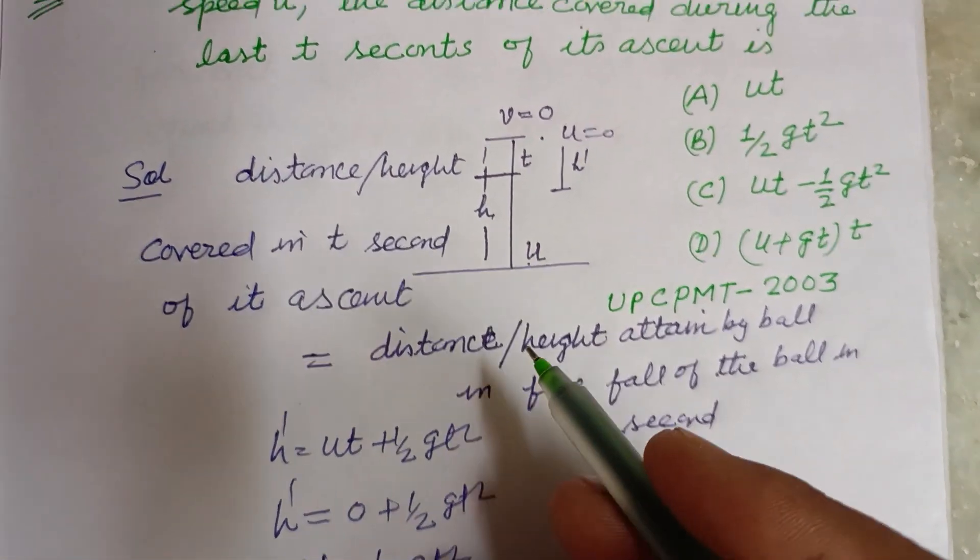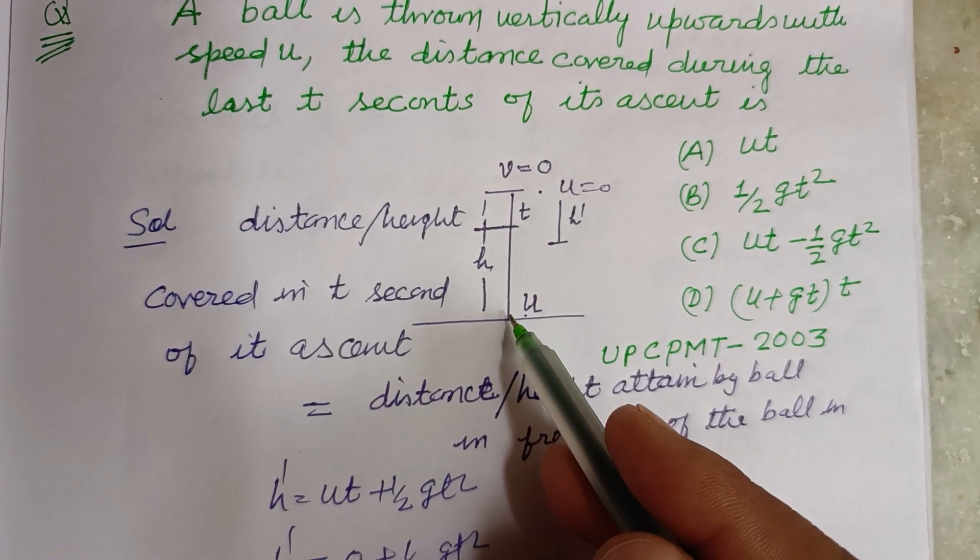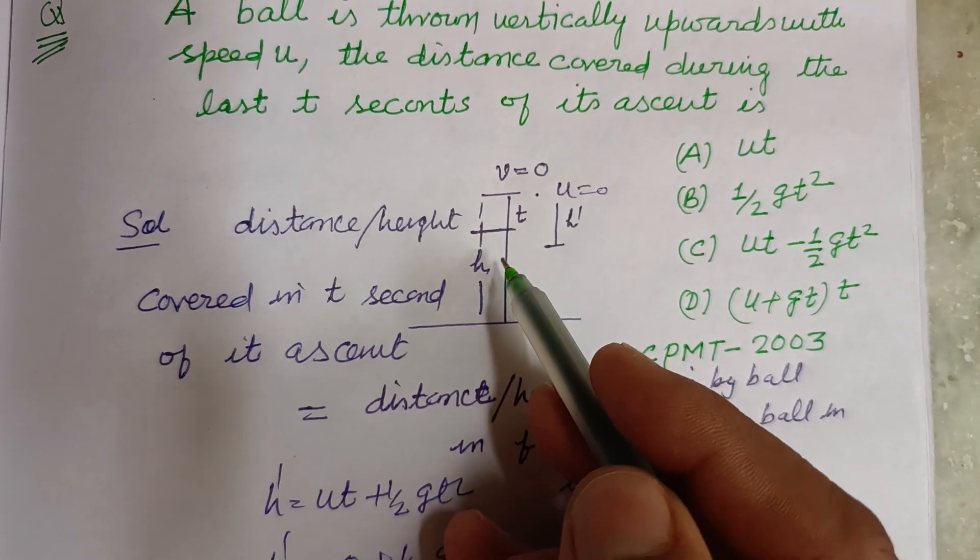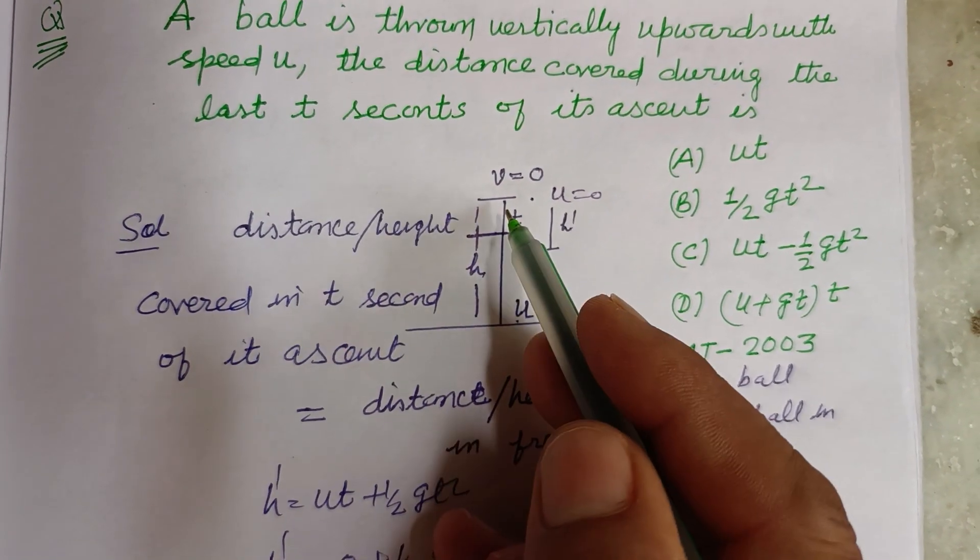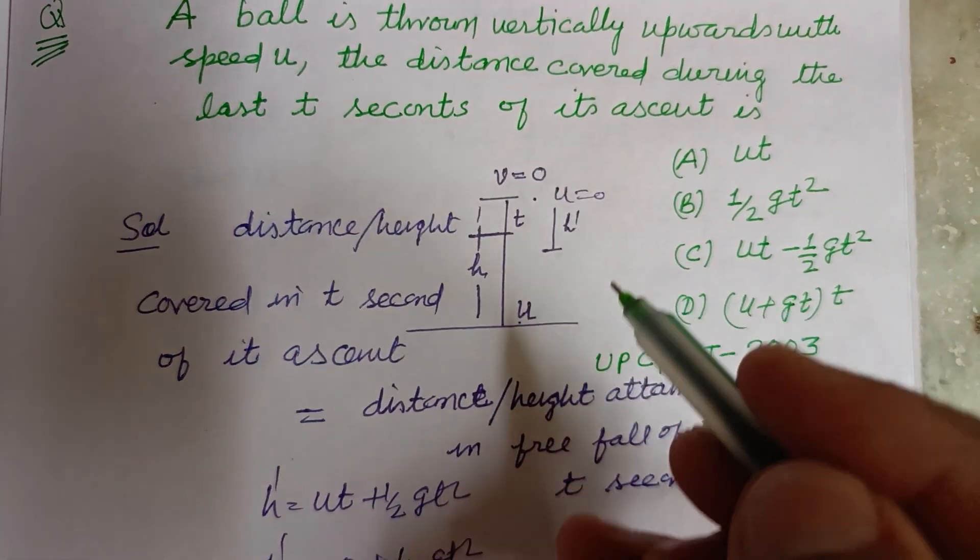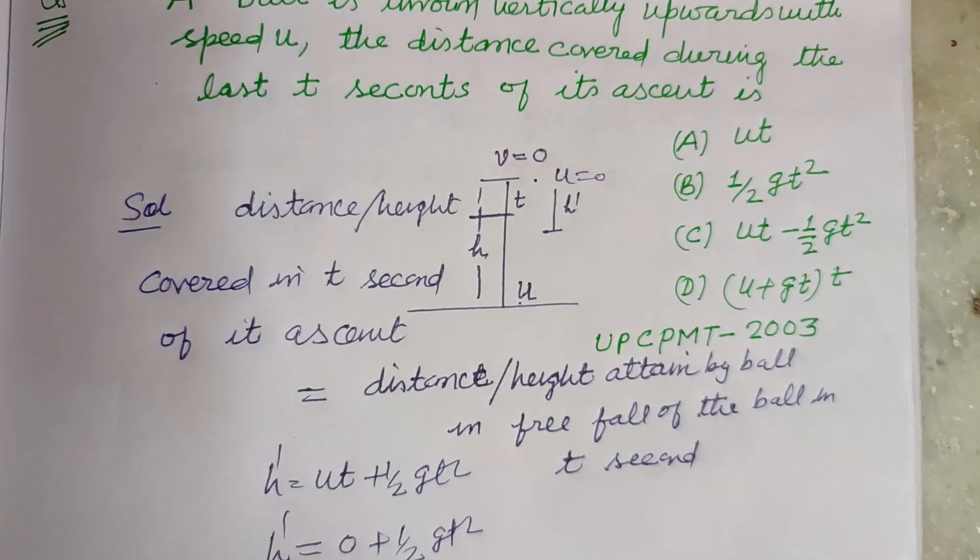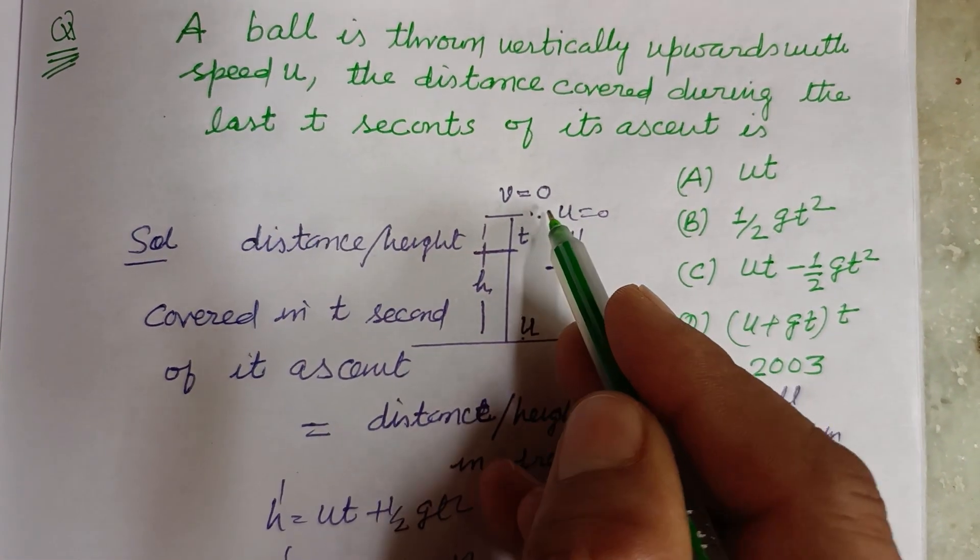The principle is this: that the distance or height covered in t seconds in upward motion is equal to height covered in t seconds in downward motion. So we take this from here.